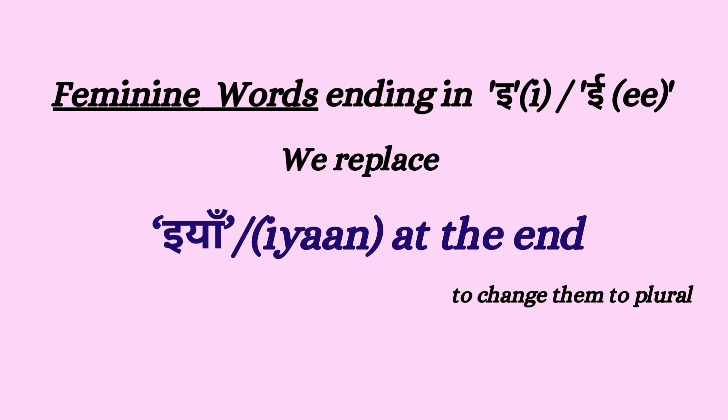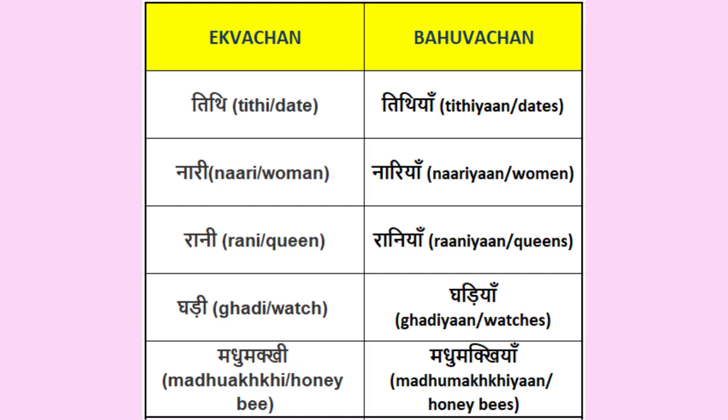Rule number 5: All feminine words which end in -i or -ee change to plural by adding -iyaan at the end. That means we replace the final -ee vowel with -iyaan. For example: tithi → tithiyaan, nari → nariyaan, rani → raniyaan, gadi → gadiyaan, madhumakhi → madhumakhiyaan.